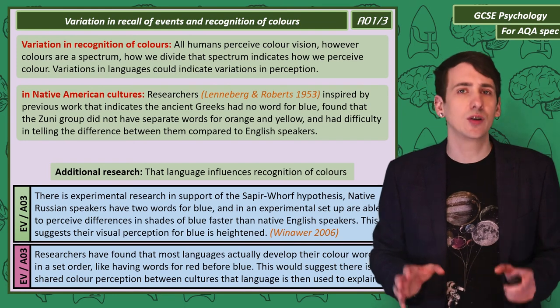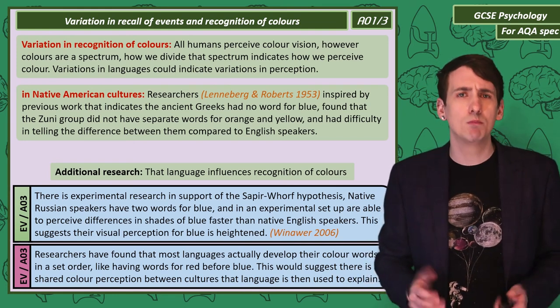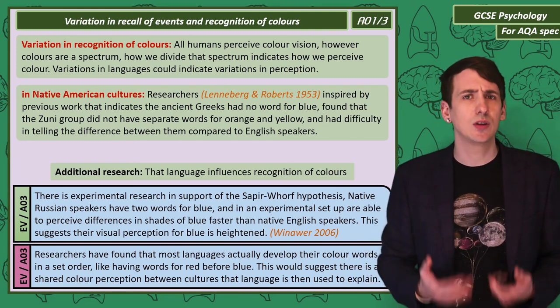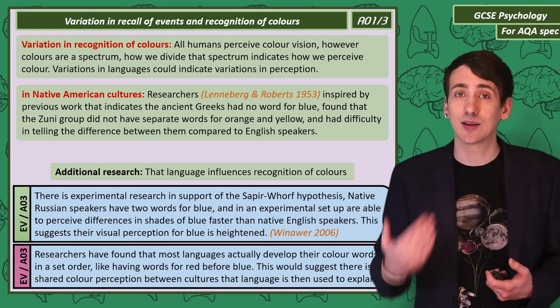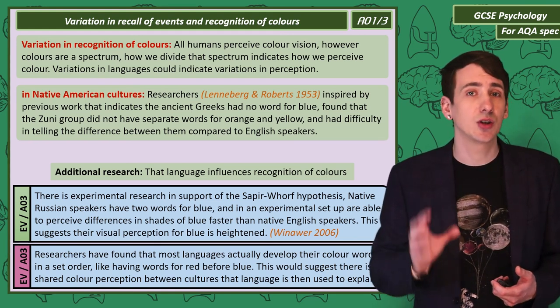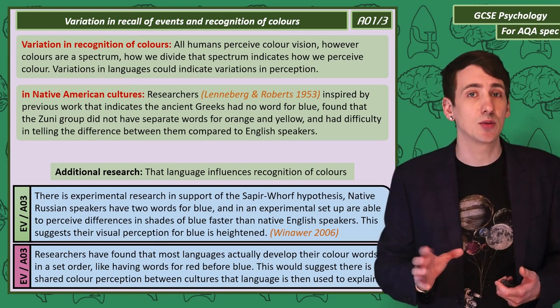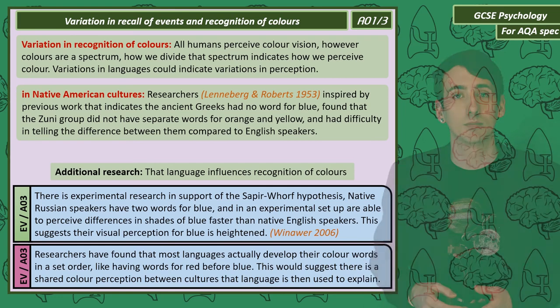However, researchers looking at the development of language around the world show that most languages develop the same colour words in a set order. This suggests there is a shared colour perception between people of all cultures.